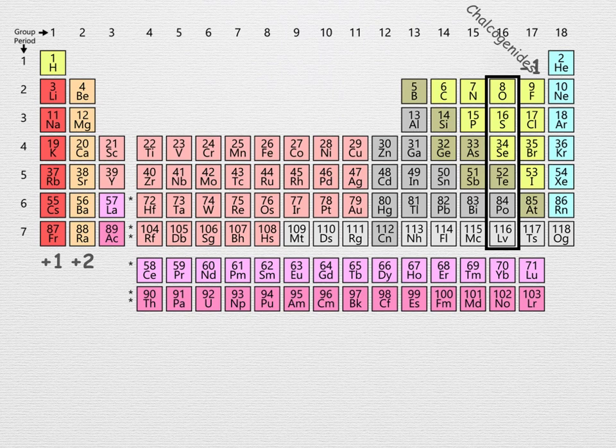In compounds, group 16 elements, the chalcogenides, the group under oxygen, usually have an oxidation state of minus two. However, below oxygen, they can also be regularly found with plus two, plus four, and plus six oxidation states.